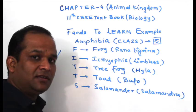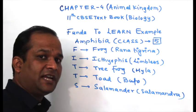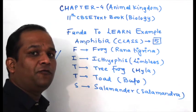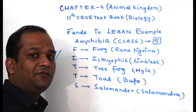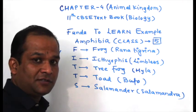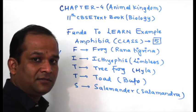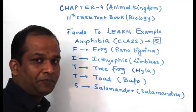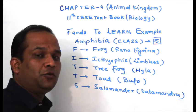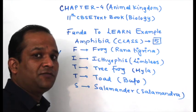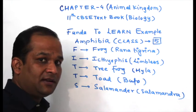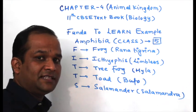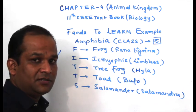Now speak with me — F-I-T-T-S: F for Frog, Rana tilina. I for Ichthyophis, limbless amphibian. T for Tree Frog, that is Hila. T for Toad, that is Bufo. And S for Salamander, that is Salamander. So total 5 examples are given for amphibians.